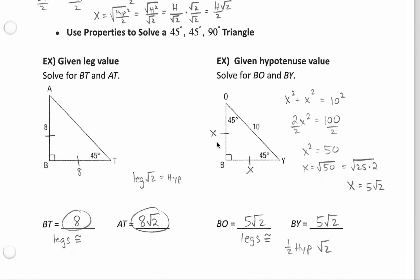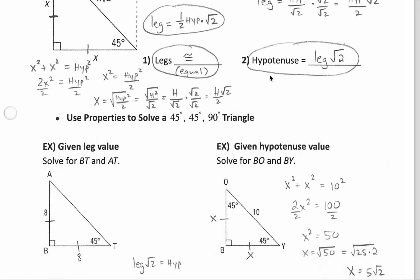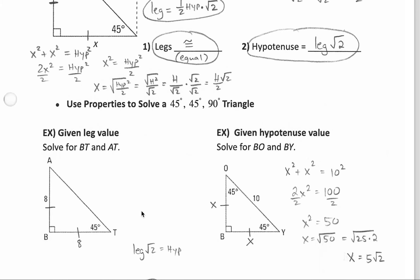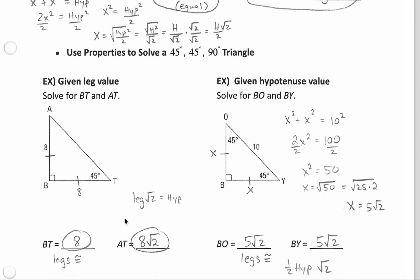There are only really two different forms of problems you can be given with these 45-45-90 right triangles. Either you're provided the side length — we know the other side length is going to be the exact same value because it's an isosceles triangle — and the hypotenuse is going to be whatever that leg value is with the square root of 2 attached. So if the side length is 8, the hypotenuse is going to be 8 times the square root of 2.